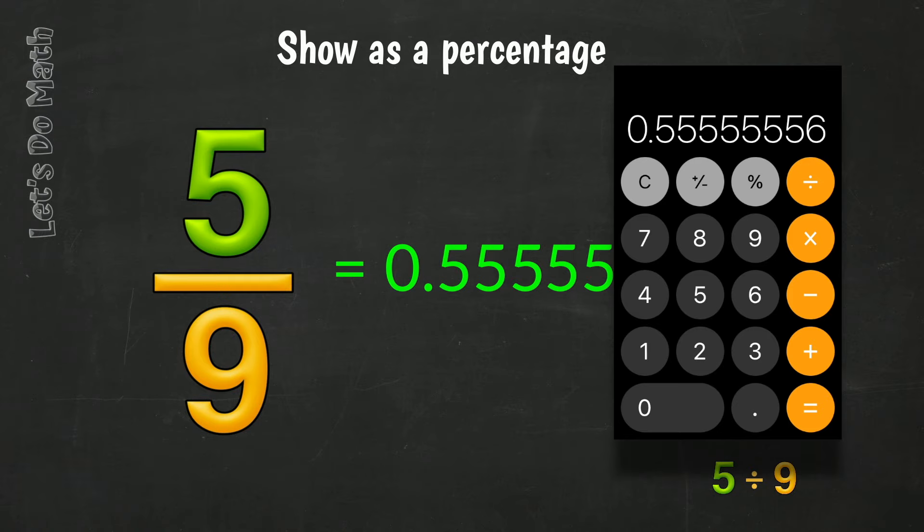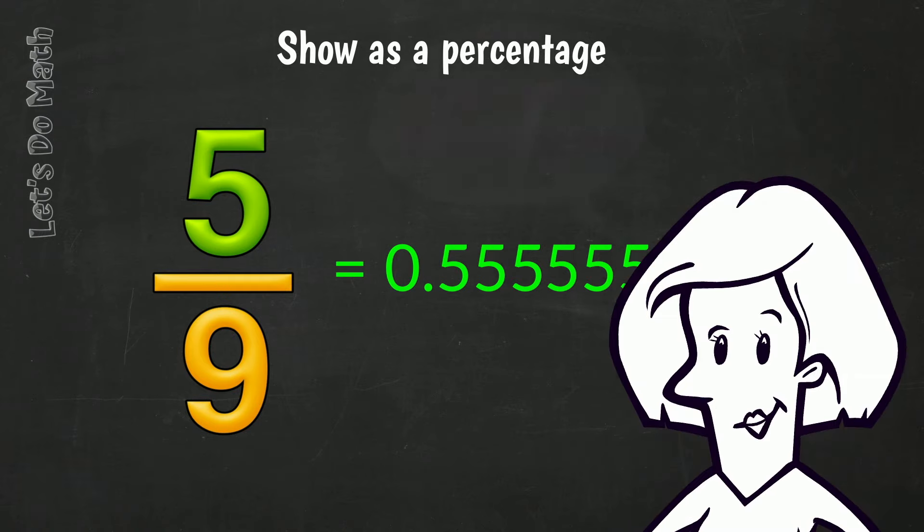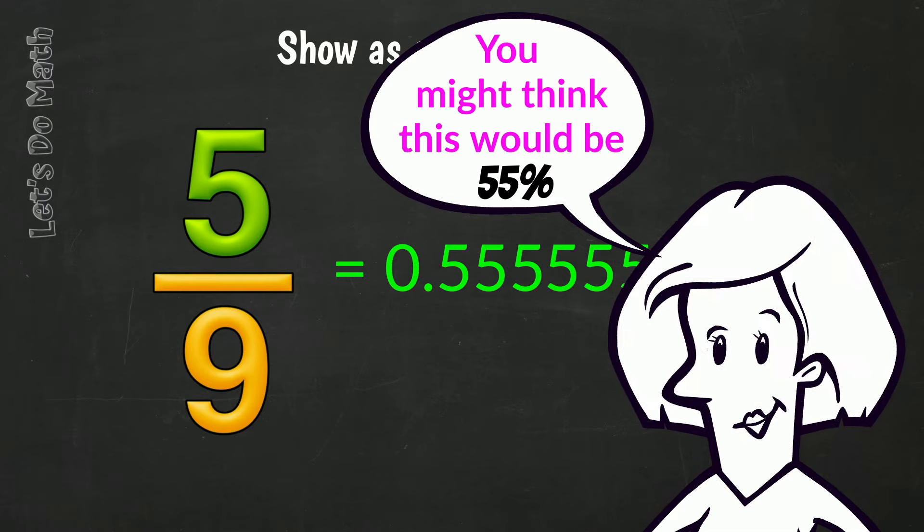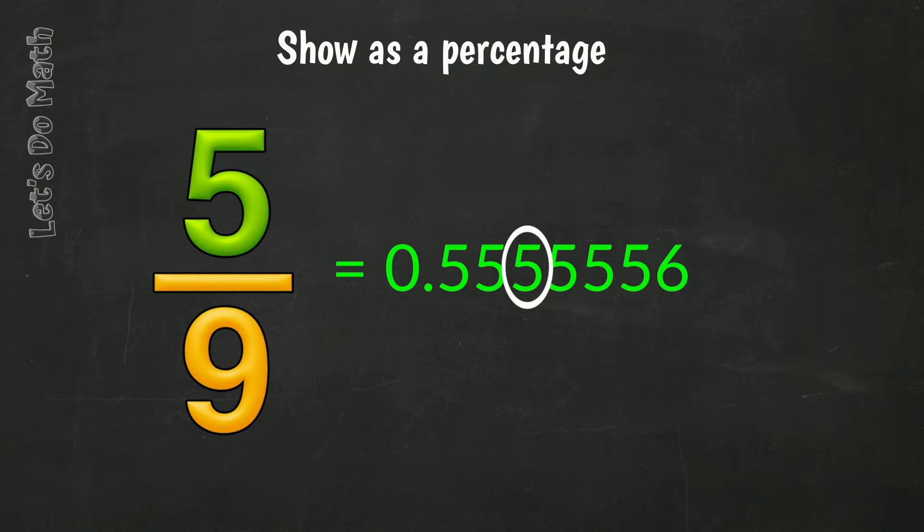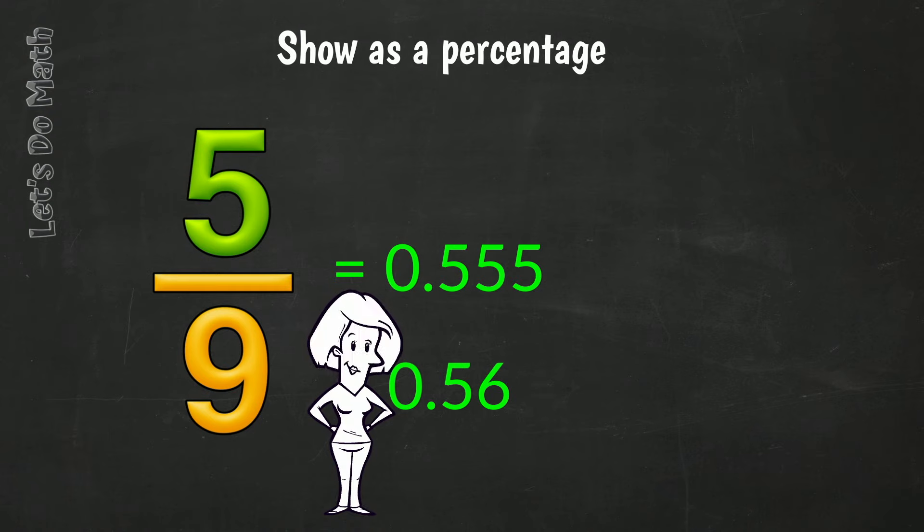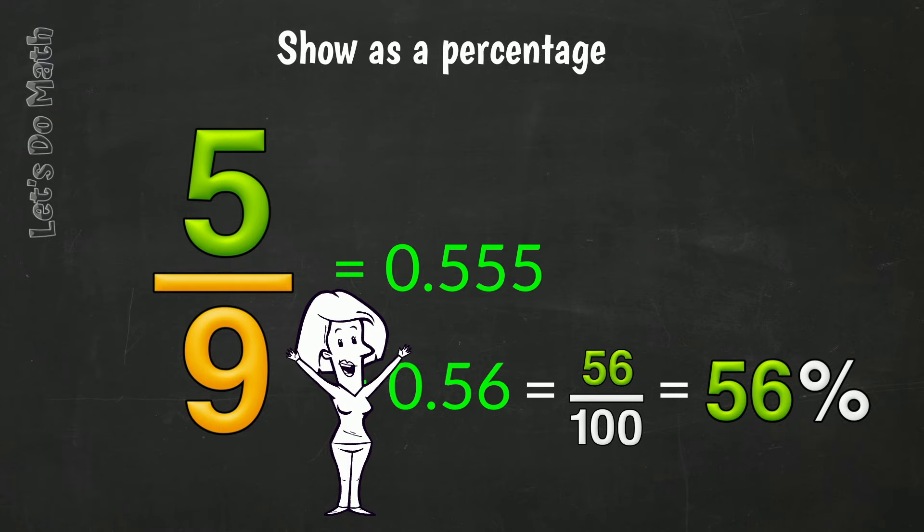0.5 recurring. You might think this would be 55%, but it isn't! The third figure is a 5, so we're rounding up to 0.56. As a fraction, that's 56 hundredths, and of course, that is 56%.